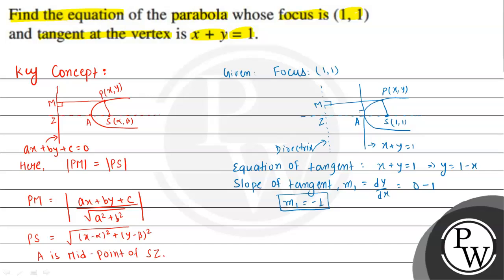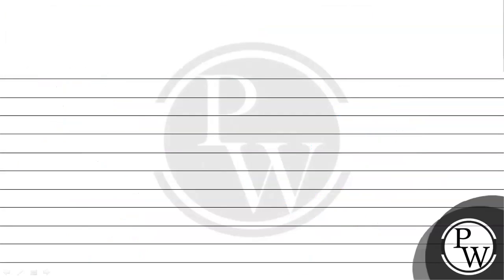Looking at the figure, the tangent is perpendicular to the axis. So the slope of the axis m2 equals minus 1 divided by m1, because if two lines are perpendicular, the product of their slopes equals minus 1. So m2 equals minus 1 divided by minus 1, which is 1. The axis has slope 1 and passes through the focus. So we can find the equation of the axis having slope 1 and passing through (1, 1).